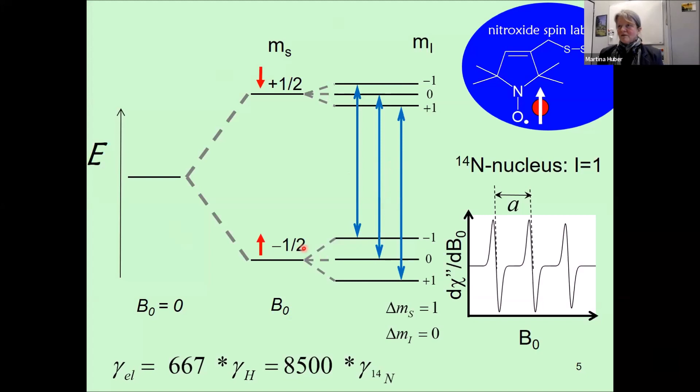Let's take a brief look at the well-known energy level scheme. The obvious difference is that the magnetic moment of the electron is significantly larger than that of the nucleus. In the nitroxide we have an unpaired electron delocalized over nitrogen and oxygen, giving us a hyperfine interaction with the nitrogen nucleus, which is an I equals one nucleus. That causes a three-line spectrum.